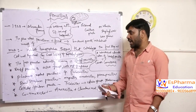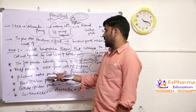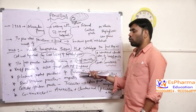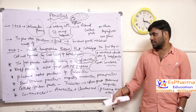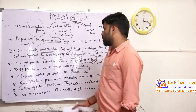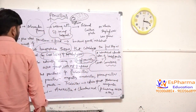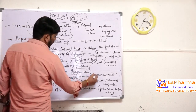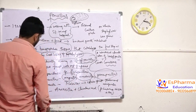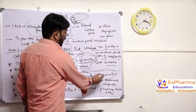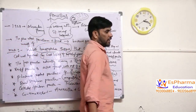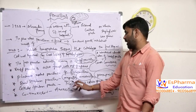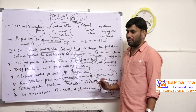We have some penicillins called beta-lactamase resistant penicillins, such as flucloxacillin. And we have the broad spectrum penicillins. The broad spectrum penicillins include ampicillin, amoxicillin, and pivampicillin.